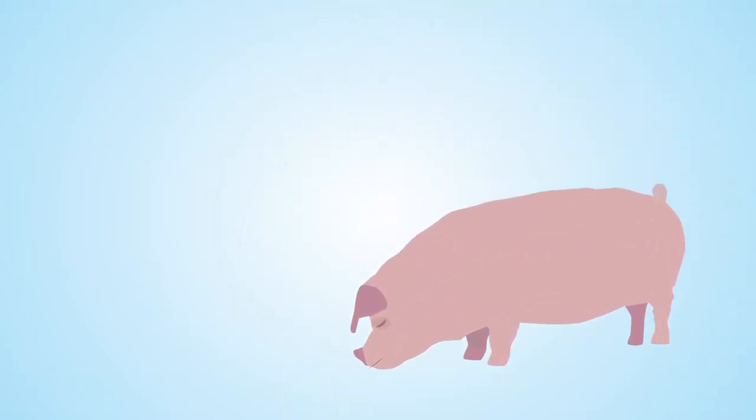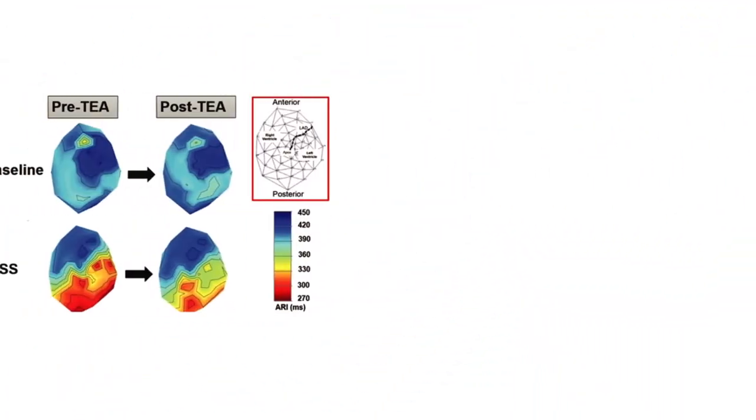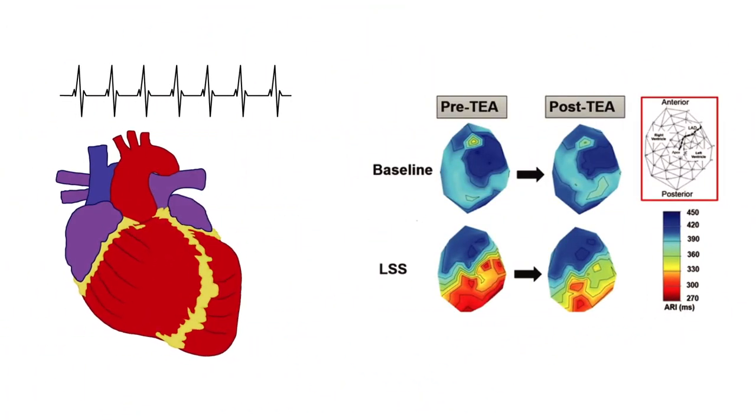Using pigs as a model, the research team strategically placed 56 electrodes on the animals' hearts, simulated the neural signals responsible for ventricular tachyarrhythmia, and administered epidural anesthesia. This allowed them to create high-resolution maps visualizing the effects of thoracic epidural anesthesia on heart rhythms.